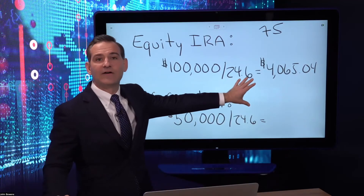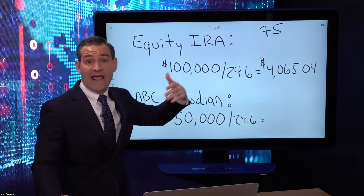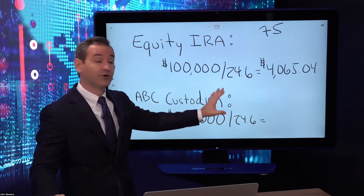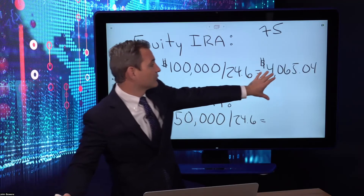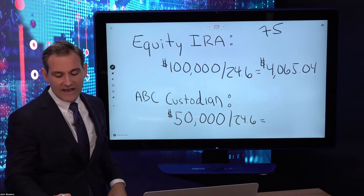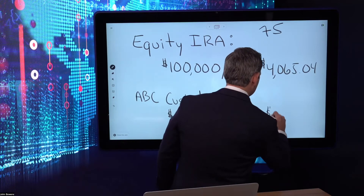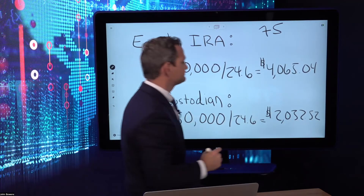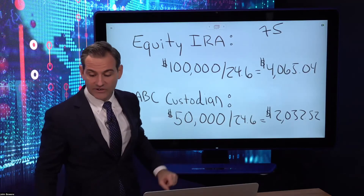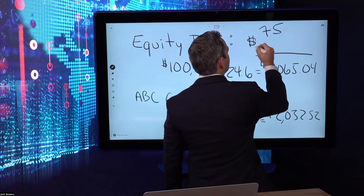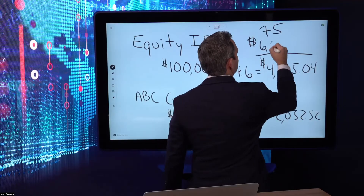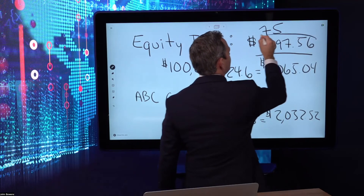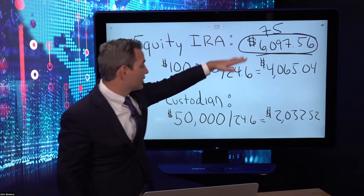On a percentage basis, that's about 4% of the principal balance. If John has enough cash flow coming into his Equity Trust IRA he can satisfy the RMD from there, but if not he'll need to look to alternative measures. Now for the ABC custodian IRA: $50,000 divided by 24.6 equals $2,032.52. The total combined required minimum distribution across both IRAs is $6,097.56.